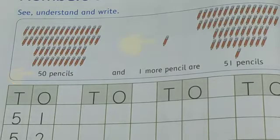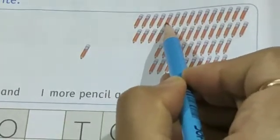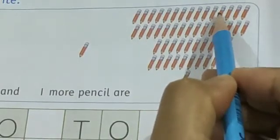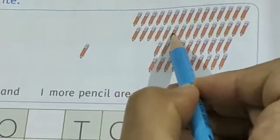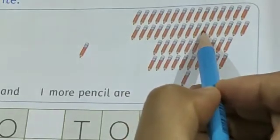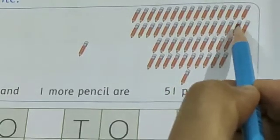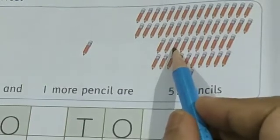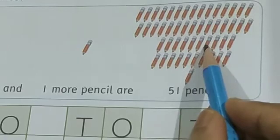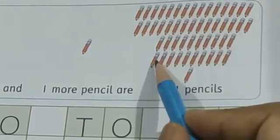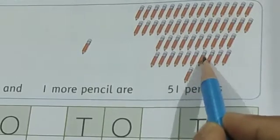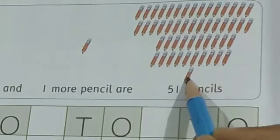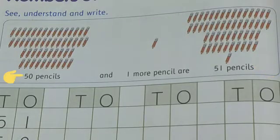So children, let's count. 1, 2, 3, 4, 5, 6, 7, 8, 9, 10... continues counting... 48, 49, 50, 51. 51 pencils. So children, 50 pencils and one more pencil are 51 pencils.